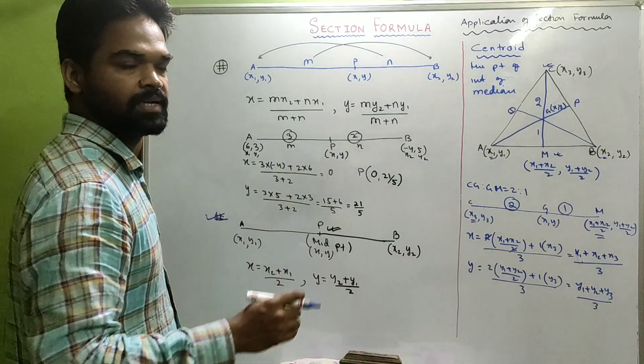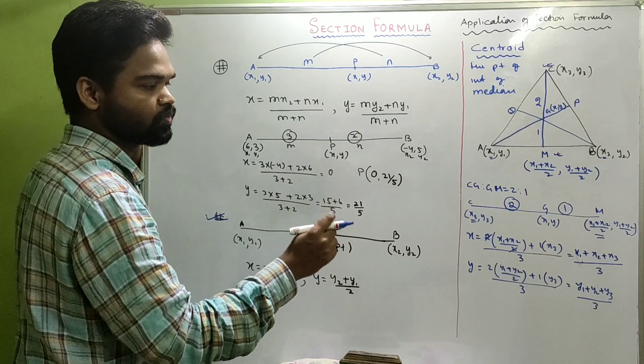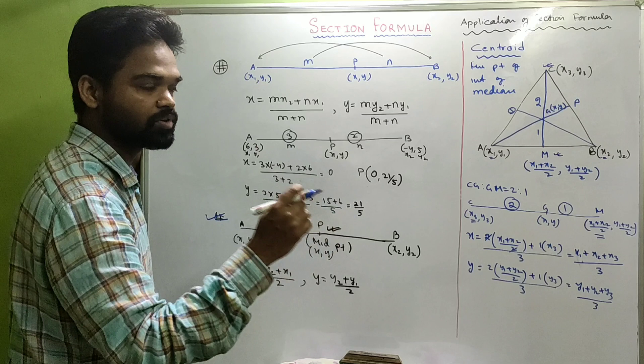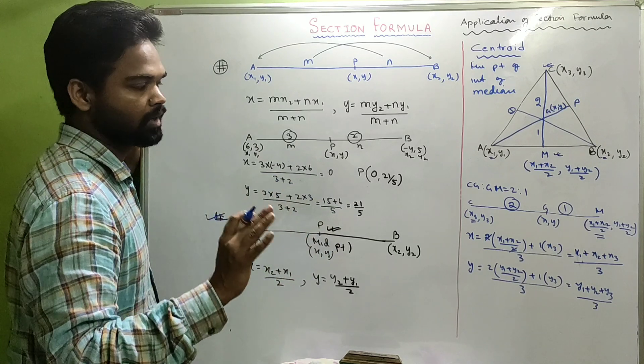So, the coordinate of the centroid will be (X1 plus X2 plus X3 by 3, Y1 plus Y2 plus Y3 by 3). Am I clear?